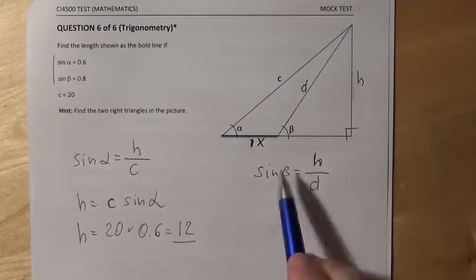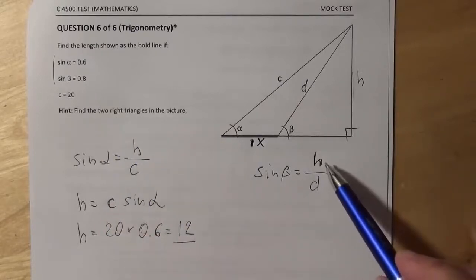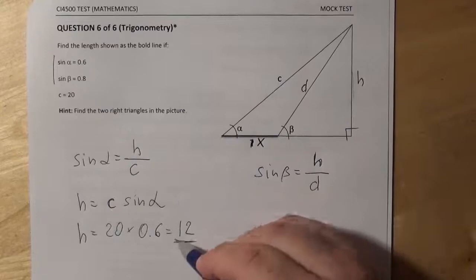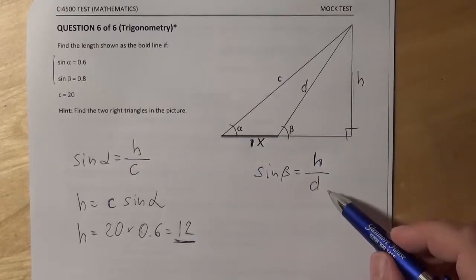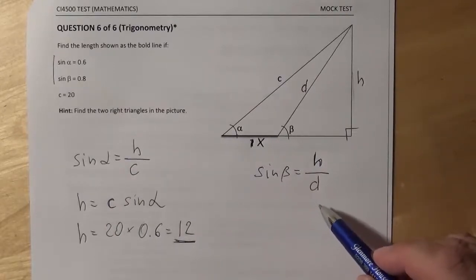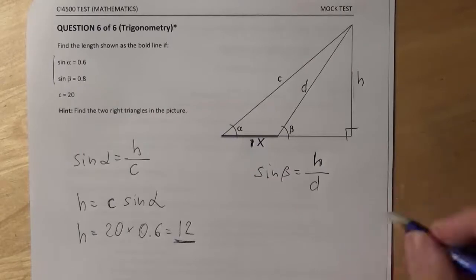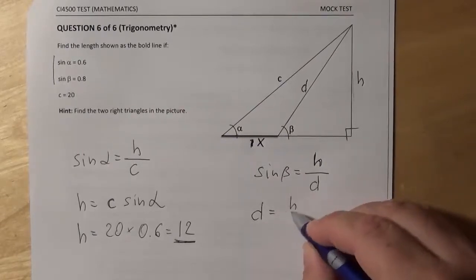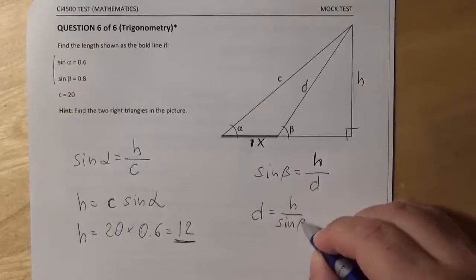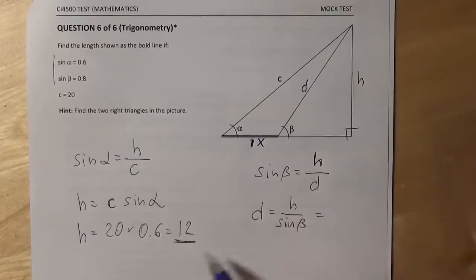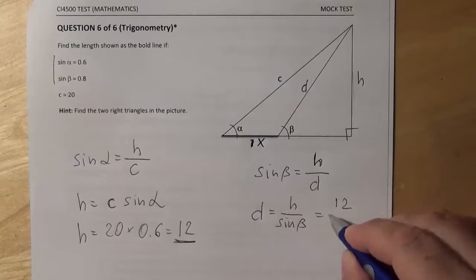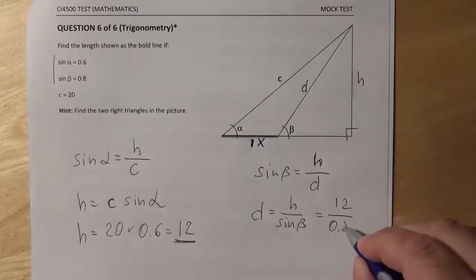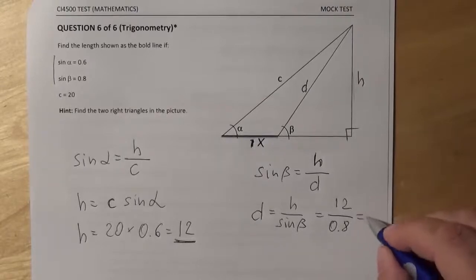We know sine beta, which is 0.8. We know H, which we have just calculated, it's 12. So we apparently have a chance to calculate, to find D. D is H over sine beta. So H is 12 over sine beta is 0.8. 12 over 0.8 is 15.